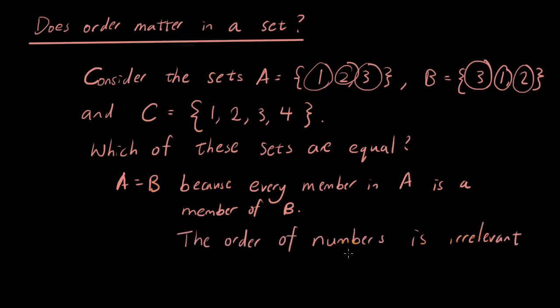The order of numbers is irrelevant. It doesn't matter that the elements in B are written such so that it's 3, 1, and 2, or you could write it as 1, 2, and 3, or 1, 3, and 2, or whatever order it is. They are equal because they have the same elements. So the order doesn't matter.